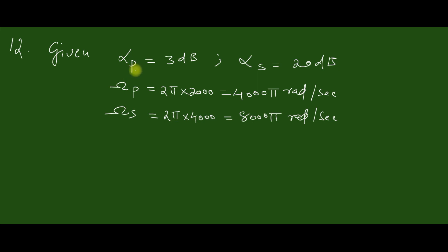The given specifications are: alpha_p equal to 3 dB, alpha_s equal to 20 dB, then the passband edge frequency ω_p equal to 4000π radians per second, and ω_s equal to 8000π radians per second. From which we can compute the order of the filter.